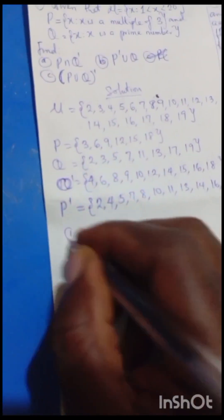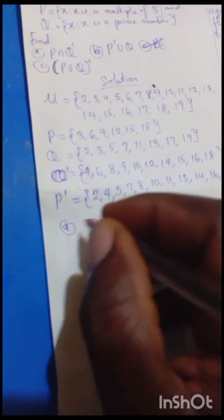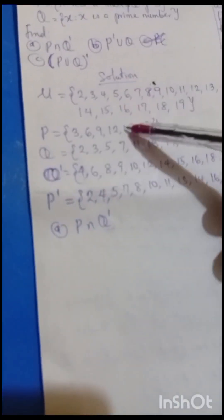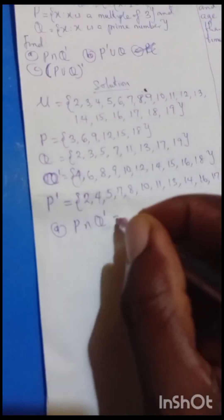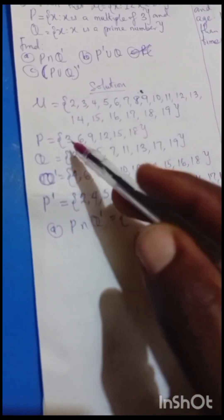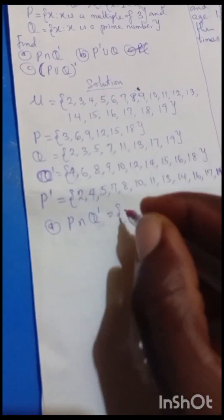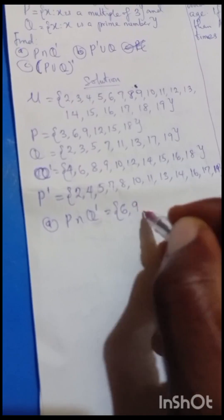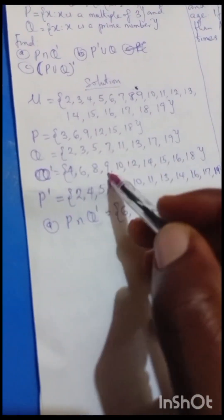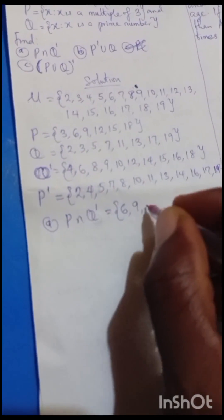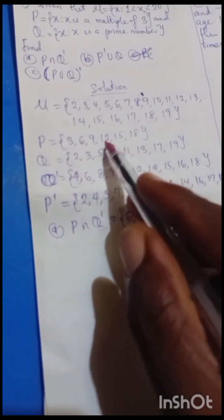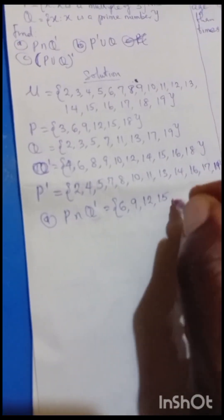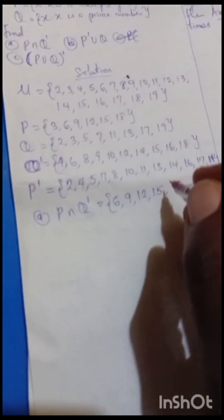Having this now, we can answer our question. The first one says we should find P intersection Q complement — that is, what is common to P and Q complement. We can see 6, 9, 15, and 18. So P ∩ Q' = {6, 9, 15, 18}.